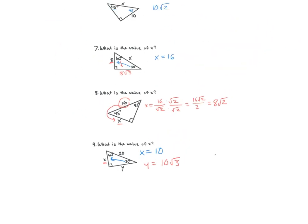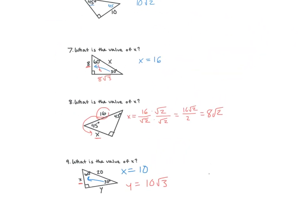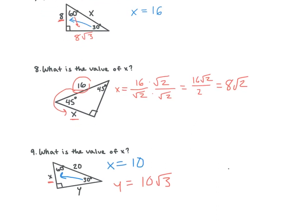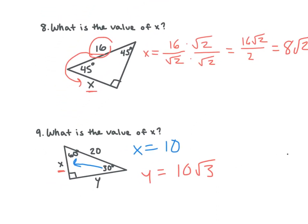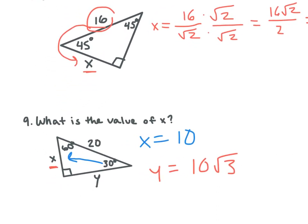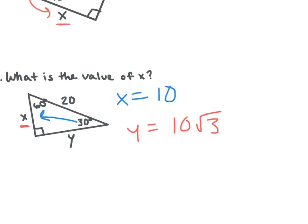So if you're looking for y, it would be 10 times square root 3. Can you simplify it? No. If we look at what's under the radical, can we break down 3 anymore? No.